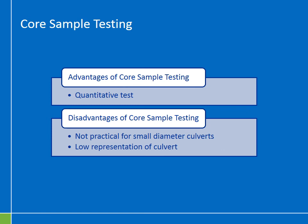The advantage of core sample testing is that it's a quantitative structural strength test — you know the compressive strength of the sample and can compare it against a benchmark from the design documents. Disadvantages: it's not practical for small diameter culverts, since you need to enter the culvert and obtain a large enough sample for testing. It also gives low representation of the overall wall strength of the culvert, as you're only measuring small areas. So you want to be smart about selecting areas for this test — pick areas where you suspect issues so you get results you can actually act on.